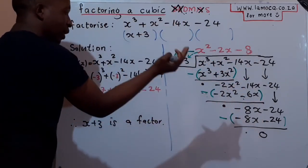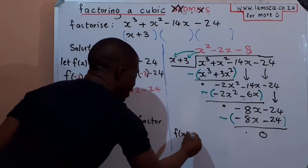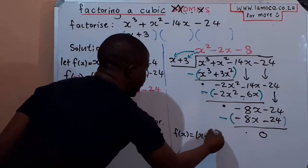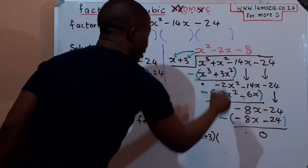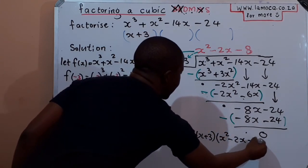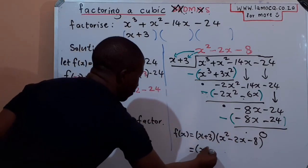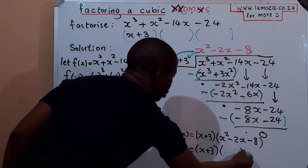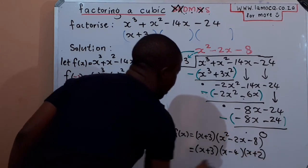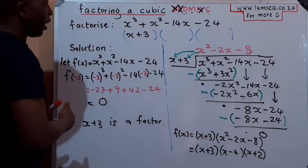The quotient from the long division gives us x² − 2x − 8, so f(x) = (x + 3)(x² − 2x − 8). We can then factorize that quadratic to get the complete factorization: f(x) = (x + 3)(x − 4)(x + 2). That is how you use long division to factorize a cubic expression.